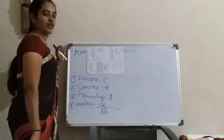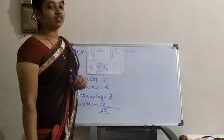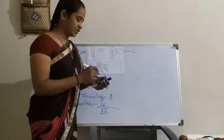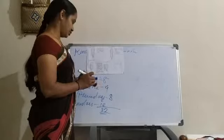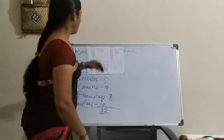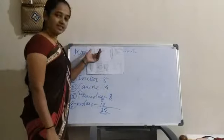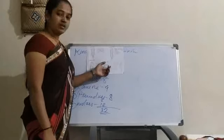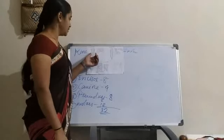Altogether, we have 32 teeth in an adult person's mouth. These are the four types of teeth: incisors, canines, premolars, and molars.